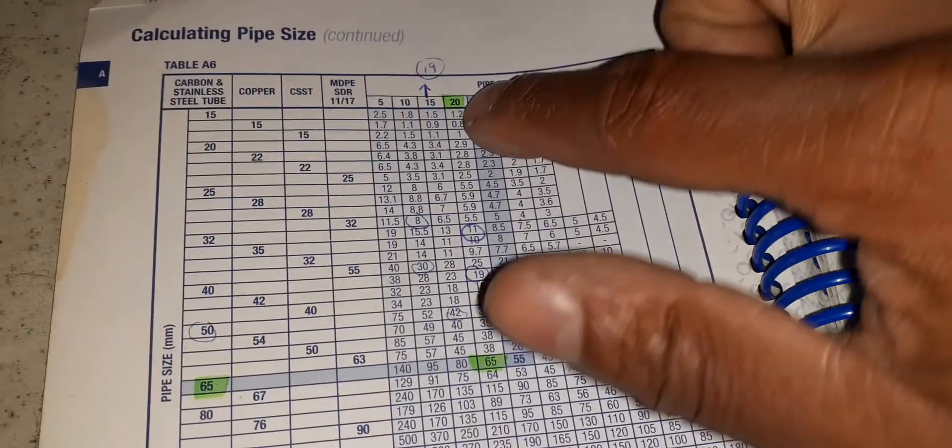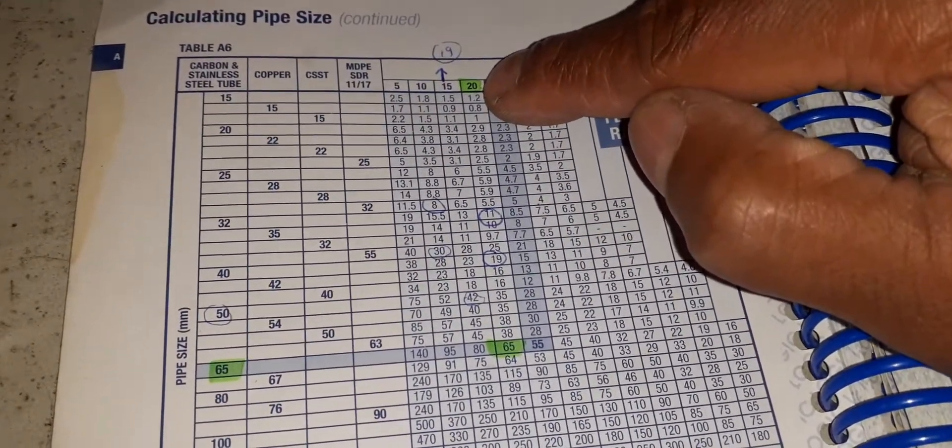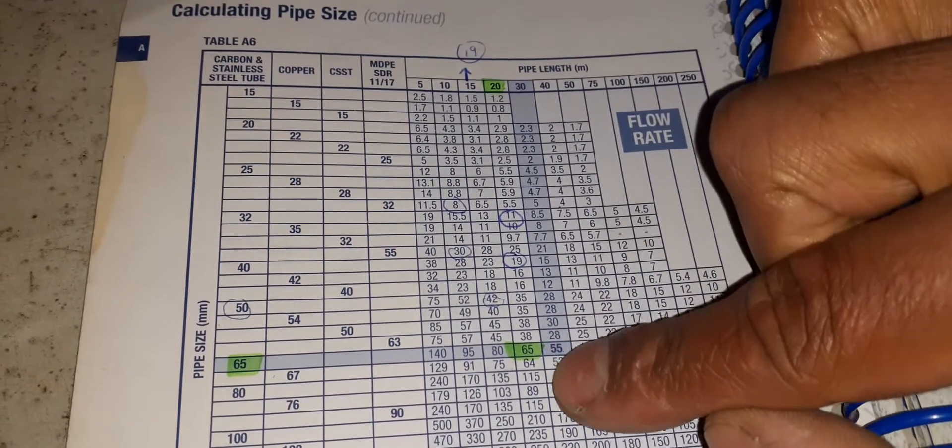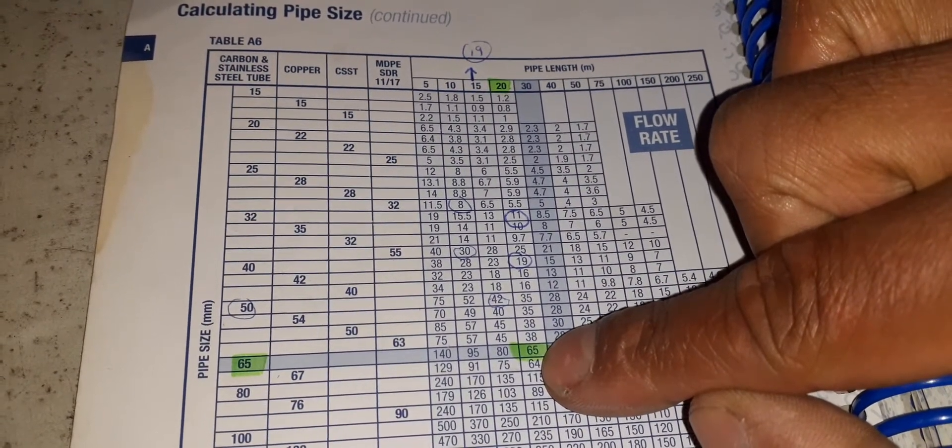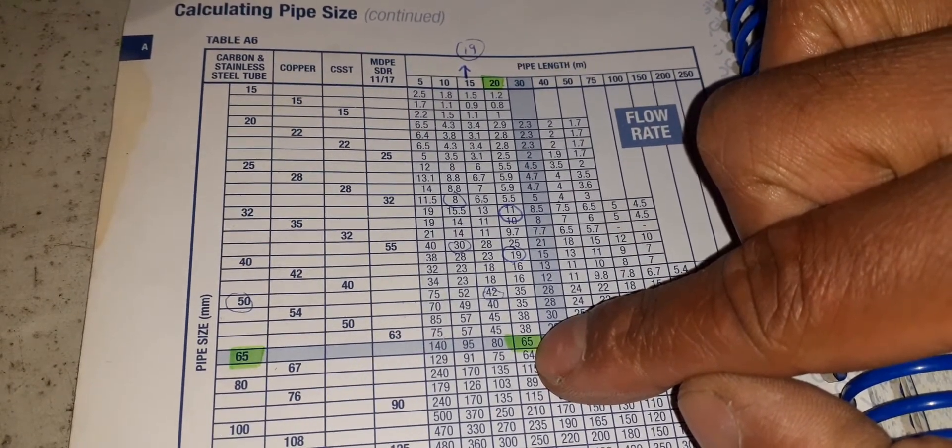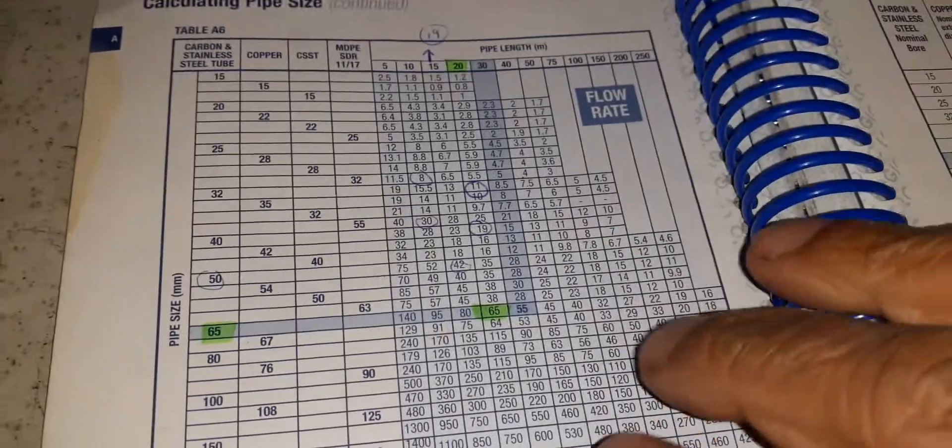65 mil will get us to 20 meters straight line of gas and give us this flow rate here, 65 meters cubed an hour. That will deal with our 18 meters.